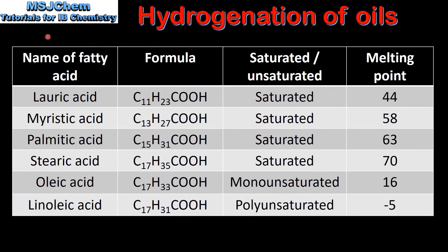Next we look at different fatty acids and their melting points. In this table we have the name of the fatty acid, its formula, whether it is saturated or unsaturated, and its melting point. The first four examples are saturated fatty acids with carbon to carbon single bonds, and their melting point increases as their molar masses increase. The last two fatty acids are unsaturated. Oleic acid is a monounsaturated fatty acid with one carbon to carbon double bond, and linoleic acid is a polyunsaturated fatty acid with two carbon to carbon double bonds. As the number of carbon to carbon double bonds increases, the melting point decreases.